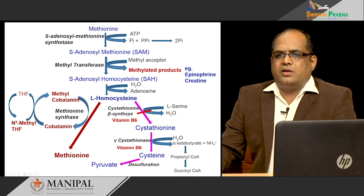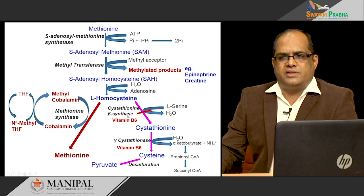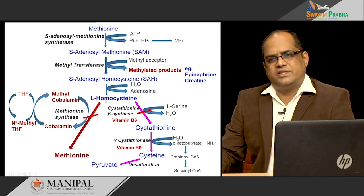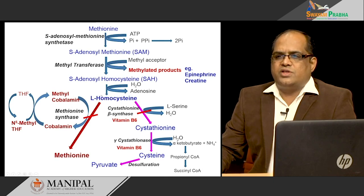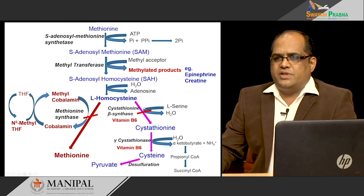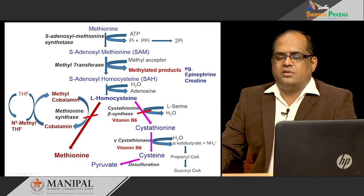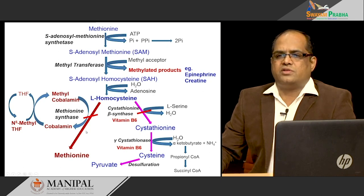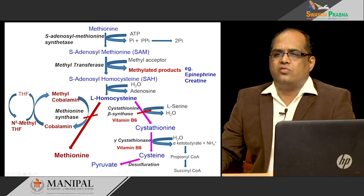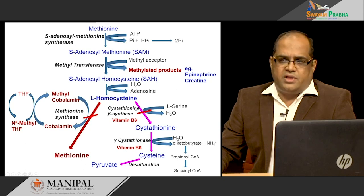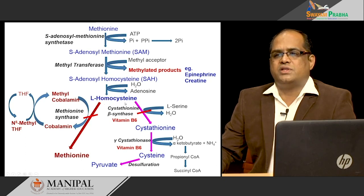If there is any block in cystathionine beta-synthase or methionine synthase, there is accumulation of the deadly molecule homocysteine, causing homocysteinemia and homocysteinuria, associated with many disorders. The deficiency may be in either enzyme, or in the three vitamins involved in homocysteine metabolism: vitamin B12 (cobalamin), vitamin B6 (pyridoxal phosphate), and folate (tetrahydrofolate). Any deficiency of enzymes or vitamins can lead to homocysteinemia.